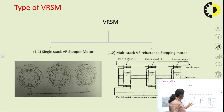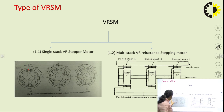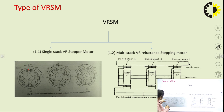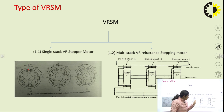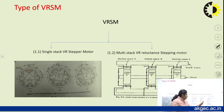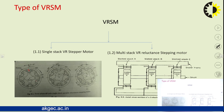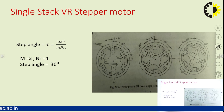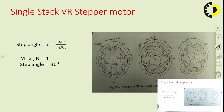In the multi-stack type there is one shaft, but multiple stacks are present — for each phase there is one stack, so the stacks are made up of phases A-A', B-B', C-C'. In this configuration on one shaft, multiple rotor and stator combinations are present, which is why it is called the multi-stack variable reluctance stepping motor.